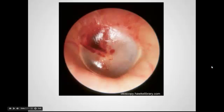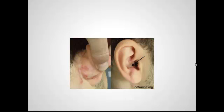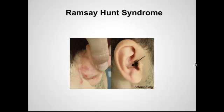On the otoscope, this is what you see: a little bit of hemorrhage, possibly some vesicles. And in a better part of his ear exam, you see he actually has vesicles on the inside and around the outside of his ear as well. So what is this? As you know, this lecture is going to be on Ramsey-Hunt syndrome.